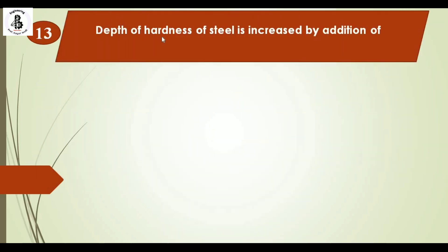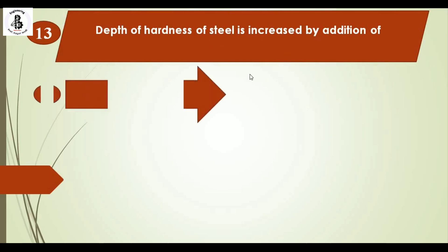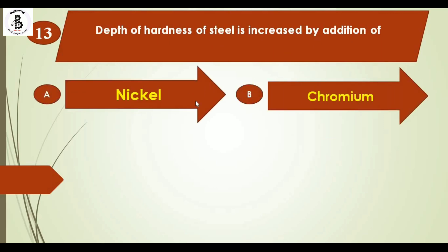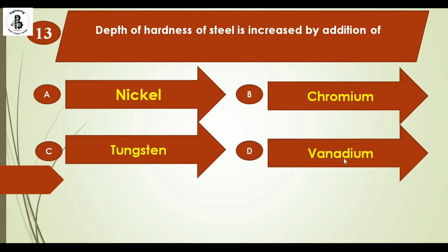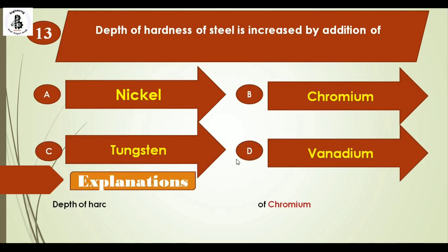Depth of hardness of steel is increased by addition of: option A nickel, option B chromium, option C tungsten, and option D vanadium. The depth of hardness of steel is increased by the addition of chromium. The right answer is option B, chromium.